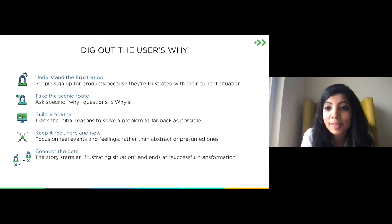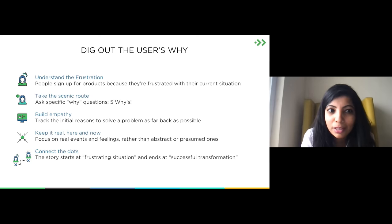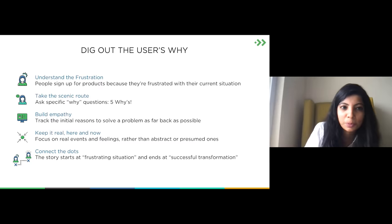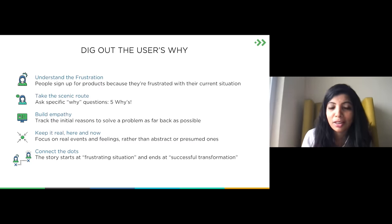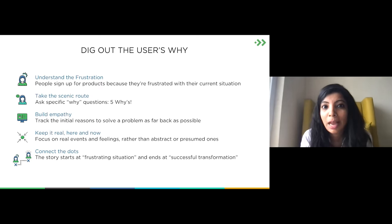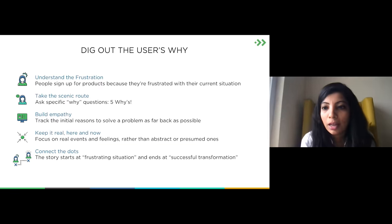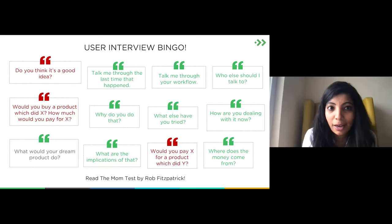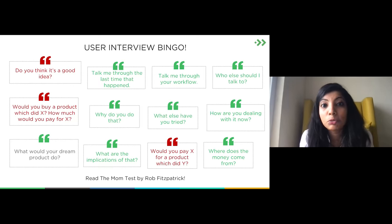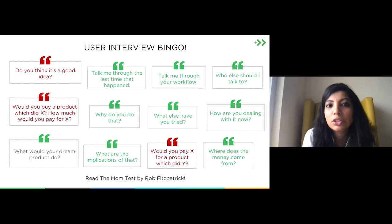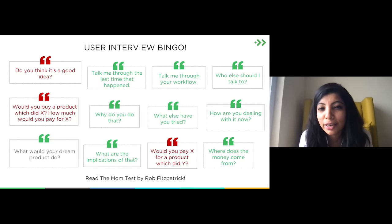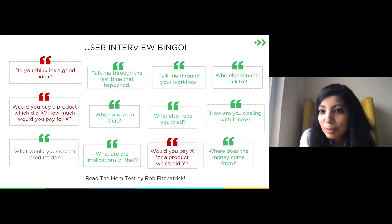Understanding what they buy and what tools they use will help you figure out positioning, marketing, messaging, and which benefits to highlight. To dig out the user's 'why,' focus on understanding their frustration — ask specific 'why' questions. The five whys is a great way to dig out motivations, build empathy, and track the initial reasons to solve a problem as far back as possible: when did this happen, why did it happen, what did you do? Focus on real events and feelings, not abstract or presumed ones. Connect the dots from the frustrating situation to a successful transformation.